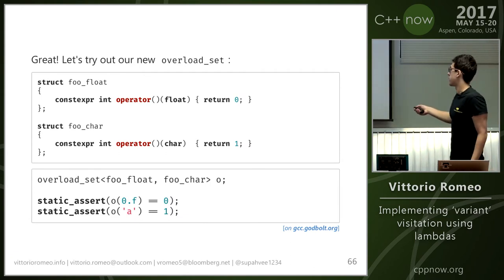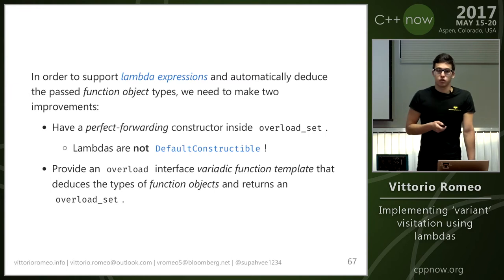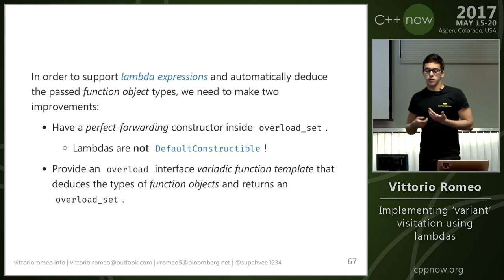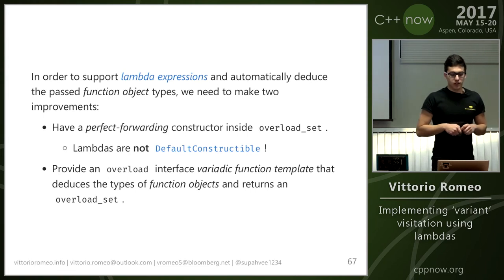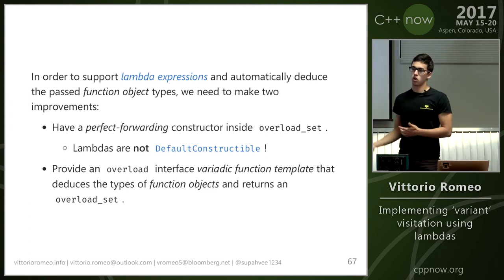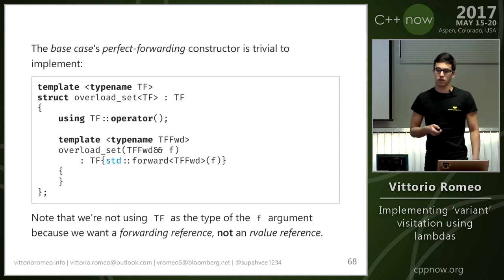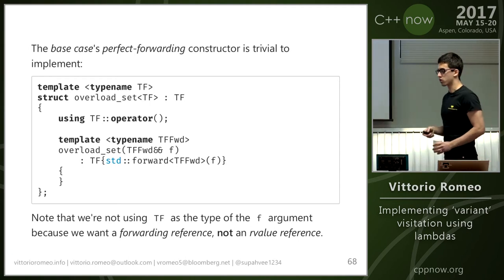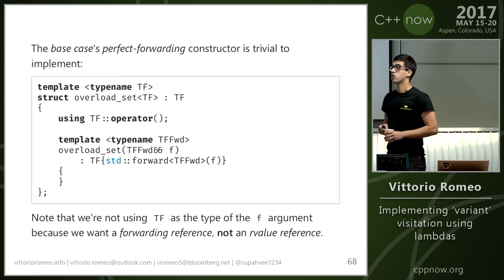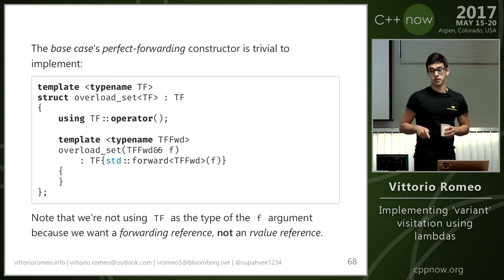Now that we have this, we can try it out with FooFloat and FooChar — build an overload set and verify it does what we expect. There is another issue: we want to do this mainly for lambda expressions, and unfortunately they are not default constructible. We want to perfect forward what the user gives us to our overload set. So we need to introduce a perfect forwarding constructor. There is a proposal by Louie to make stateless (captureless) lambdas default constructible — that doesn't really help here but could be useful for other metaprogramming scenarios.